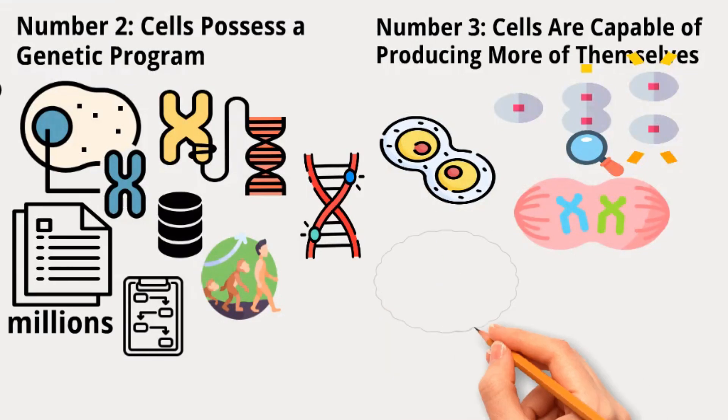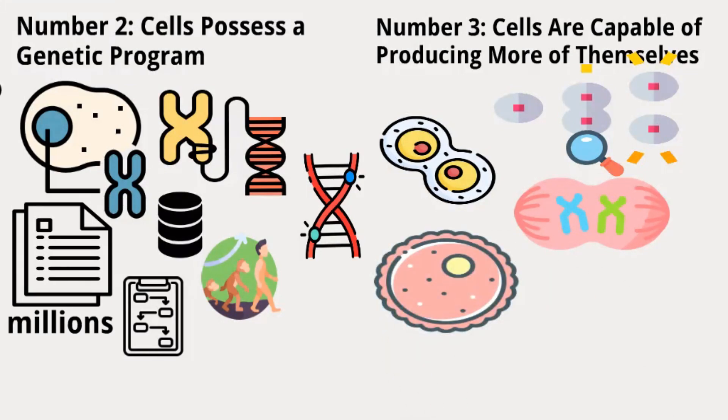However, in some cases, like when a human egg cell divides, one of the cells can keep most of the cell material, even though it only gets half of the genetic information.